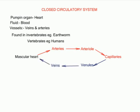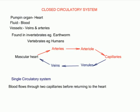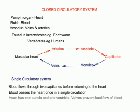In a single circulatory system, the blood passes through the heart once per complete circulation, passing through two capillary systems before returning to the heart. The heart has one auricle (atrium) and one ventricle. Valves are found at the entrance into the atrium and between the atrium and ventricle; they open to allow blood to flow in one direction and close to prevent backflow. The single circulatory system is found in earthworms and fish.